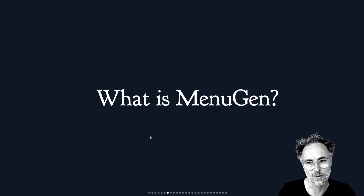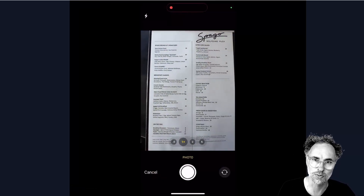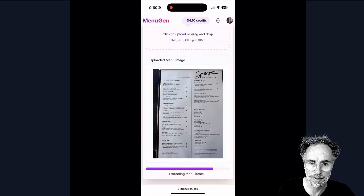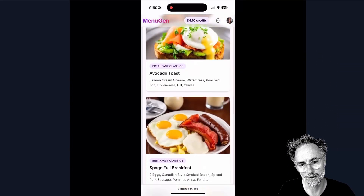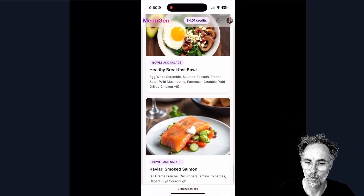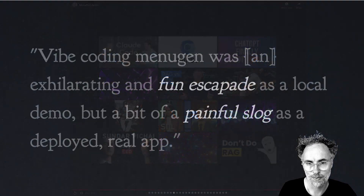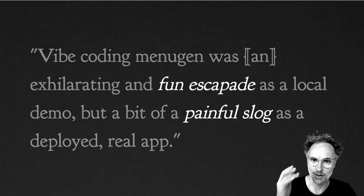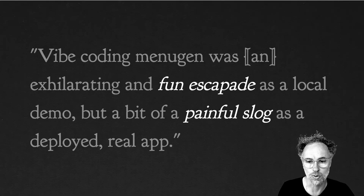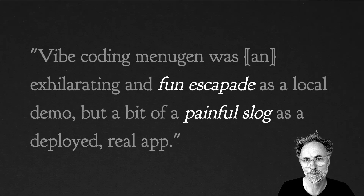So I want to talk about Menugen. What is Menugen? Menugen is an app that Andre vibe coded last month. It's basically a simple web app that allows you to take photos of textual restaurant menus and convert them into images representing the food on that menu. This is useful if you're at a fancy restaurant and you don't know what the ingredients mean, or if English is not your native language and you want to get a sense of what's available on the menu. Andre started building this app using a vibe coding approach — meaning he just jumped into an editor, started giving it natural language prompts, and letting it write the code without having too much control or even understanding of how the code worked.